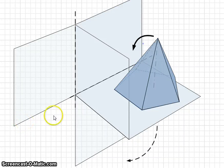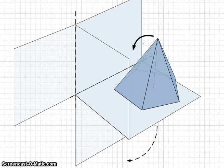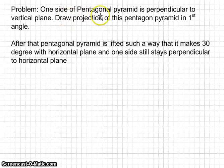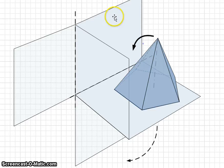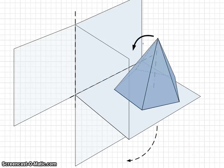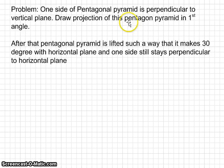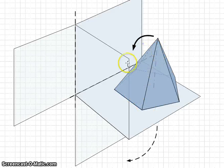This video is about isometric projection of a pentagon pyramid. The problem statement is that one side of the pentagon pyramid is perpendicular to the vertical plane. It is in first angle projection, so the first part requires drawing the projection based on this shape.